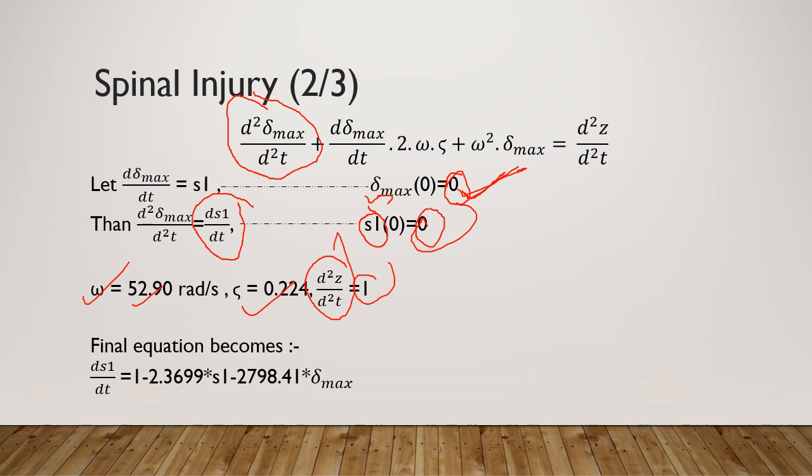We transfer all this thing to the right side of the equation. This having a value of 1, then the equation will become 1 minus 2.3699 times s1.